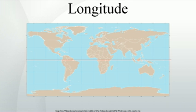Points with the same longitude lie in lines running from the North Pole to the South Pole. By convention, one of these, the prime meridian, which passes through the Royal Observatory, Greenwich, England, was intended to establish the position of zero degrees longitude. The longitude of other places is measured as the angle east or west from the prime meridian, ranging from 0° at the prime meridian to +180° eastward and 180° westward.